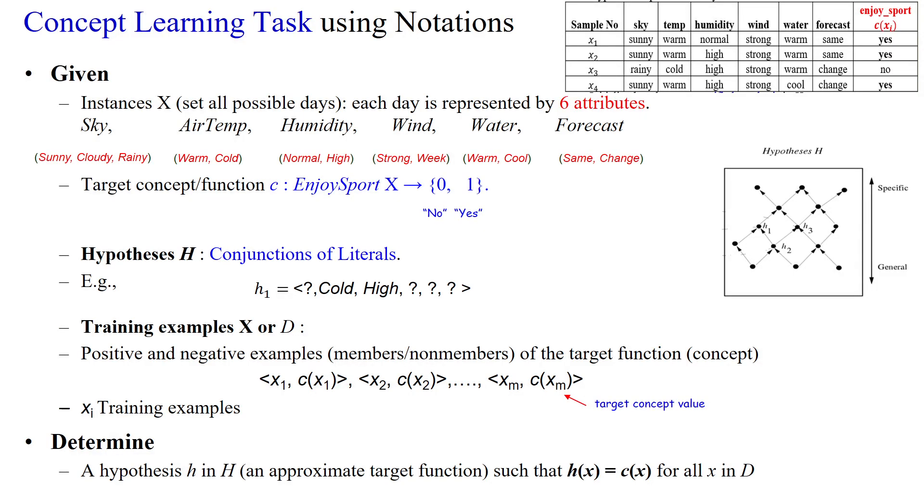Hi everyone, how do we represent the problem statement to perform a particular task using concept learning with notations? Here the given data set is having four number of instances or training examples that is represented with capital X. This is the instance space X.